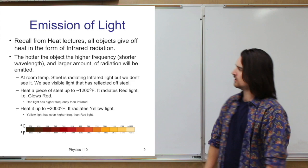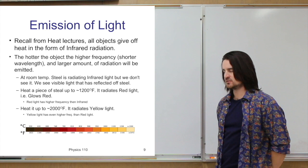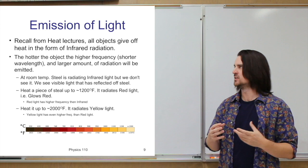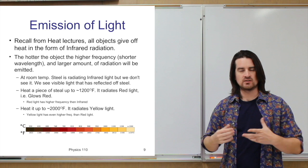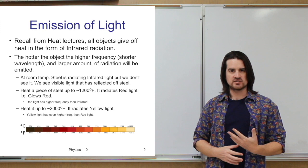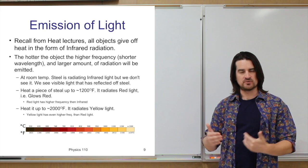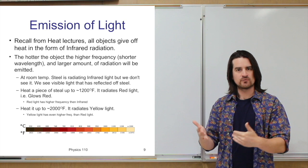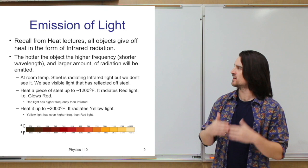Now we're going to switch gears slightly and talk about some other properties of light, specifically having to do with the emission of light. If you recall from our lectures about heat, all objects give off light in the form of infrared radiation. As it turns out, the hotter an object is, the higher the frequency of light it's going to give off — meaning higher frequency, shorter wavelength. And not only does it give off higher and higher frequency light, it gives off more and more light as well.